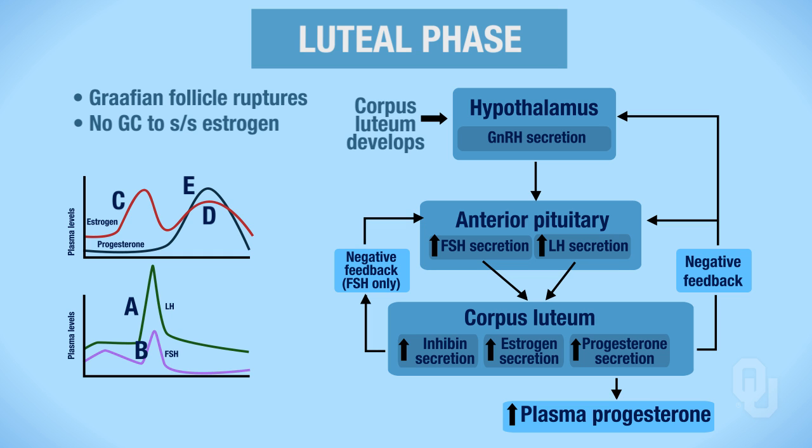Basically, the two hormones that are synthesized and secreted are because the corpus luteum has developed. Once the corpus luteum develops, your FSH and your LH can be released, which then causes the corpus luteum to synthesize and secrete both estrogen and progesterone.